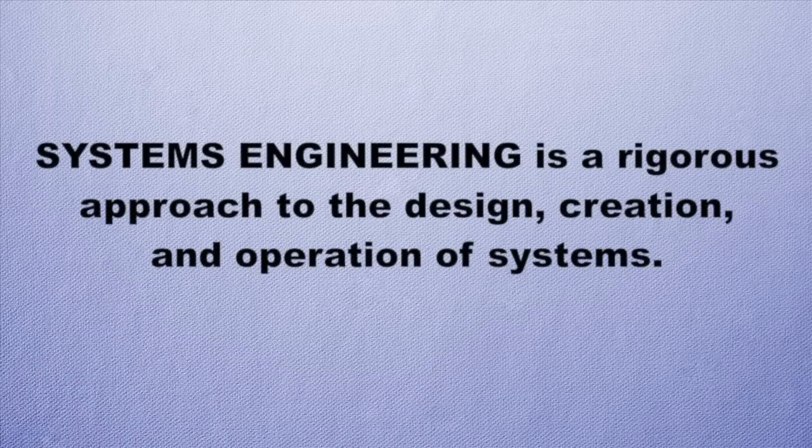System engineering is a rigorous approach to designing, creating, and operating a system — and optimizing the system to meet the requirements and goals set for it. At its core, system engineering involves engineering: the application of physics, math, and science to solving some problem. There's something that needs to be done, and engineers use the laws of physics and mathematics to find some solution for it, with all kinds of different disciplines involved depending on the problem — chemists, metallurgists, and others.